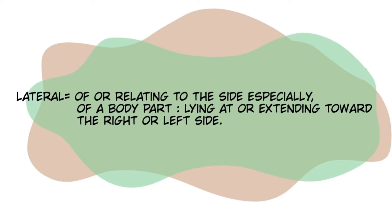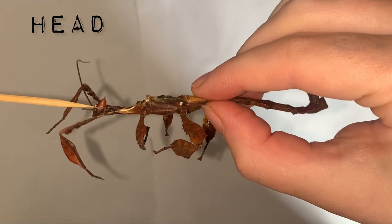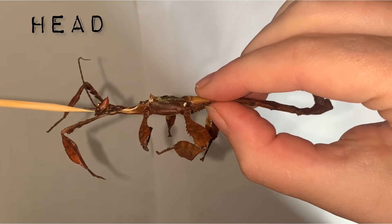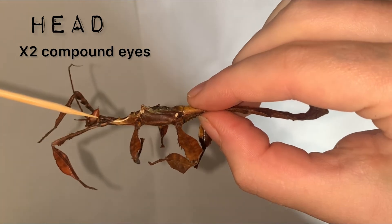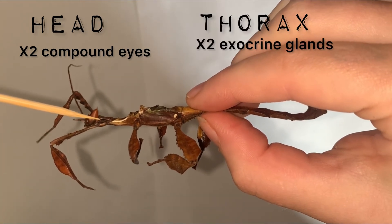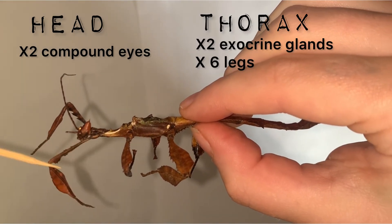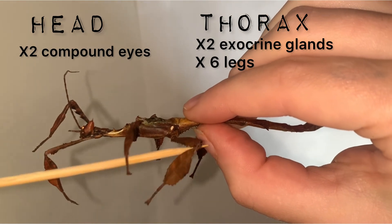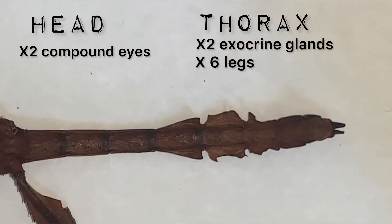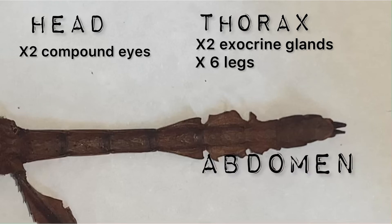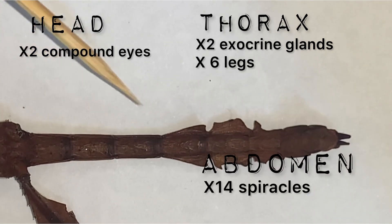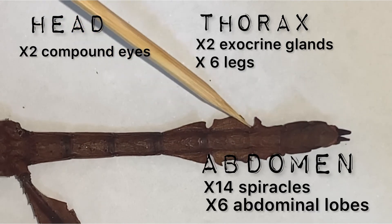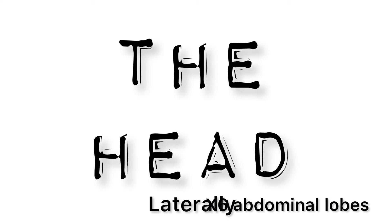Now we can move on to the lateral external view. Starting from the head, the lateral external view of the insect includes two large compound eyes, and the thorax includes the exocrine defense gland and six long legs. Moving further down onto the abdomen, the lateral external view also consists of seven spiracles on both sides and the abdominal lobes. Now let's get into further detail.